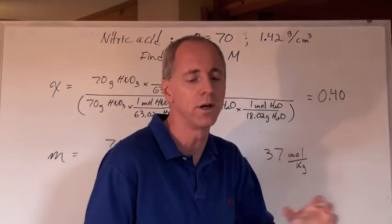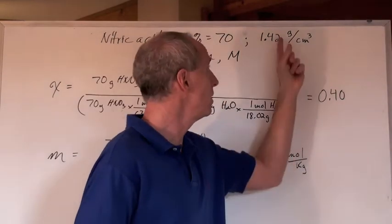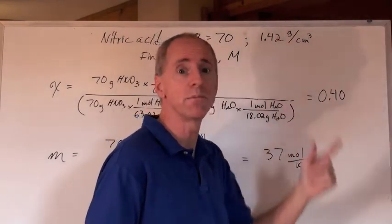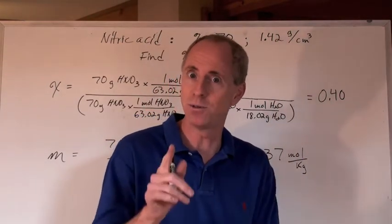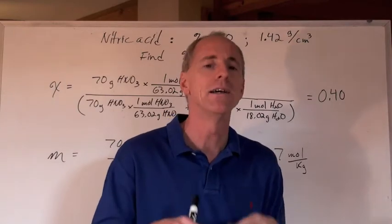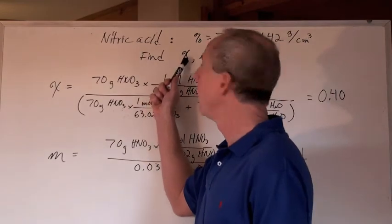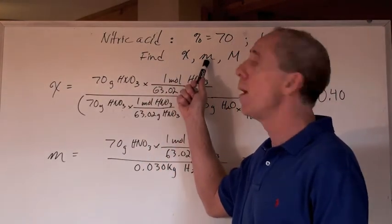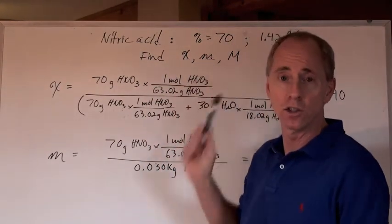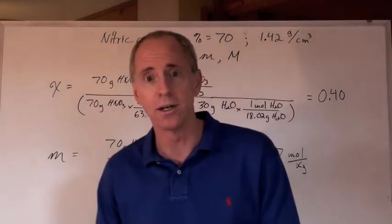And you're given the density of 1.42 grams per cubic centimeter. What do you need that for? It's coming. That really means 1.42 grams per milliliter. With that information, can you calculate the mole fraction, the molality, and the concentration? That's big M, moles per liter.